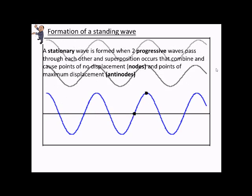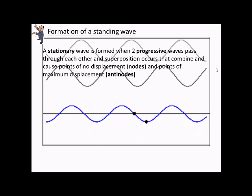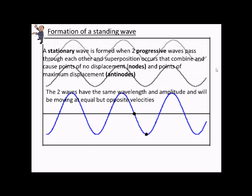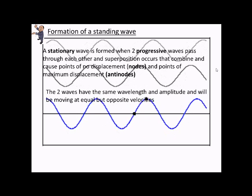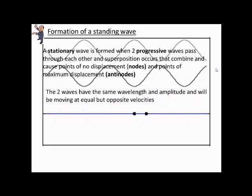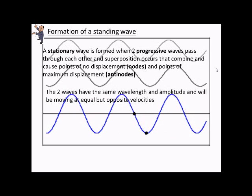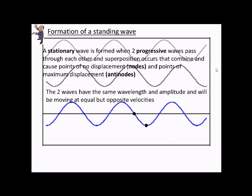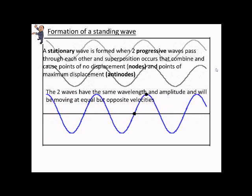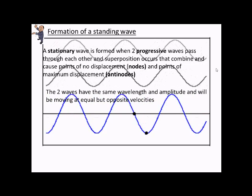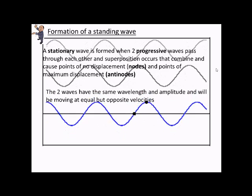These two waves here have the same wavelength and amplitude and are moving at equal but opposite velocities. This is the key thing needed to create a standing wave. You must have two waves with the same wavelength, the same amplitude, and equal but opposite velocities. Without this, the wave won't create a standing wave.